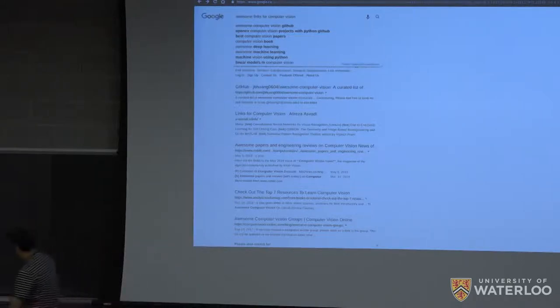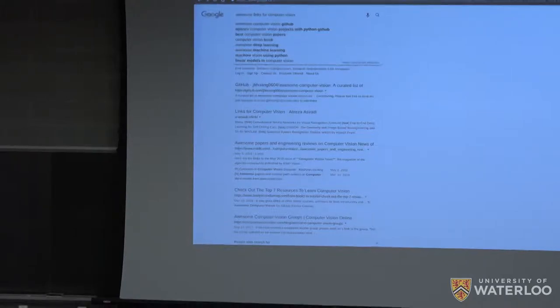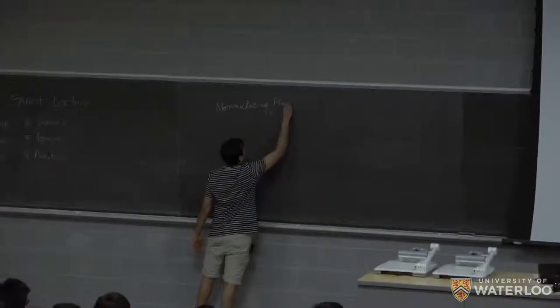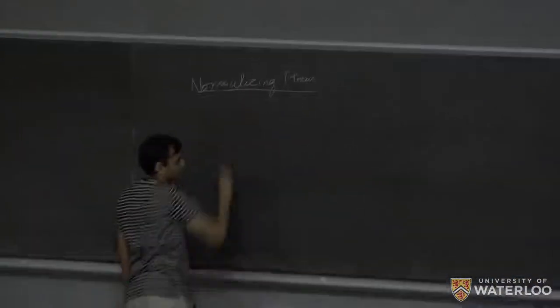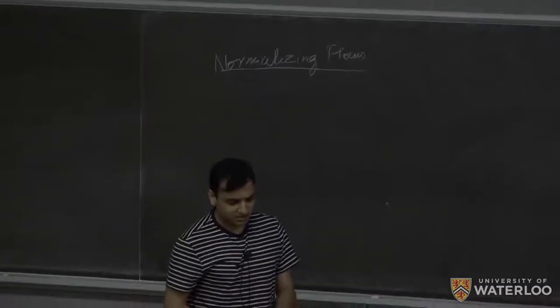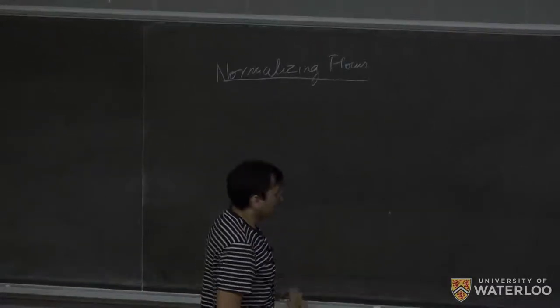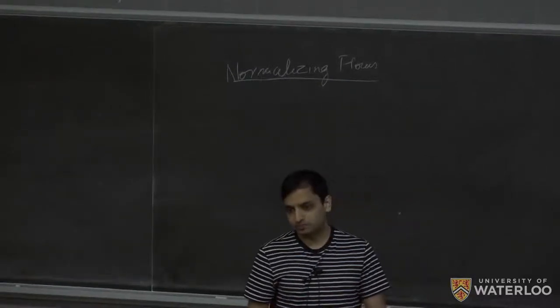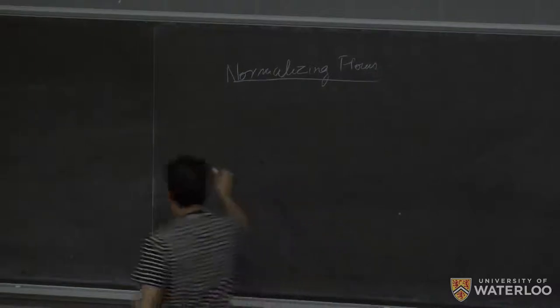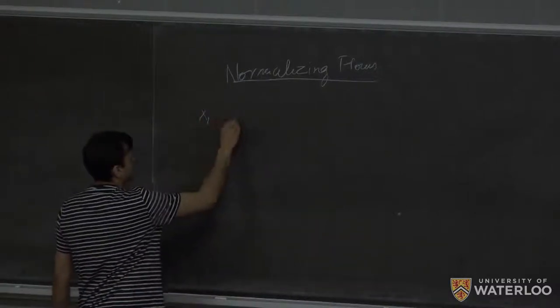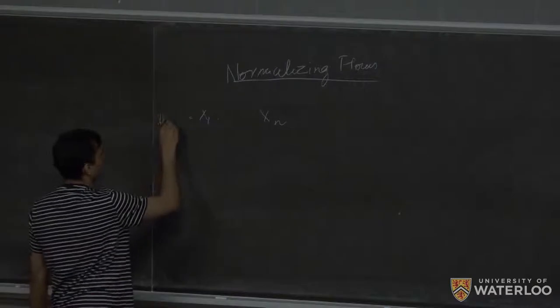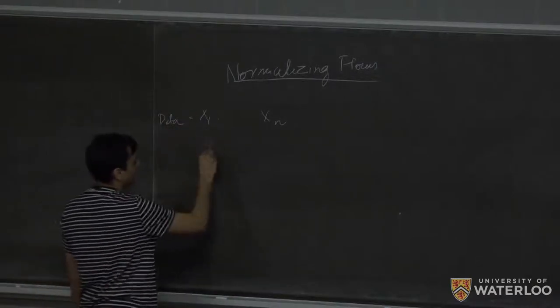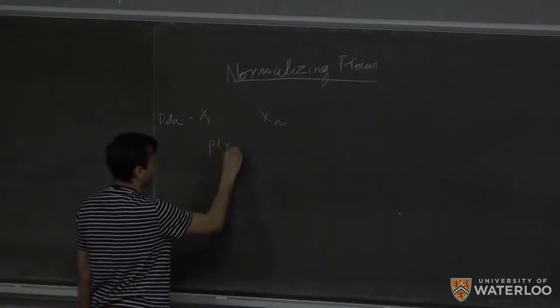So what I'll do is I'll introduce a specific part of deep generative models at a very high level. So this is what is called normalizing flows. I will not go into all technical details here, but mostly in machine learning, what we are interested in doing is learning a distribution. So what we have is we have a bunch of samples, some data, and I want to find out what distribution created that data.